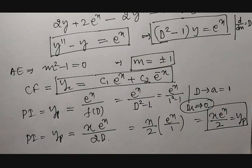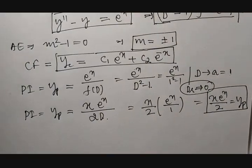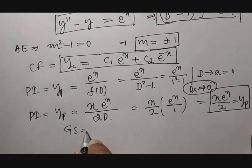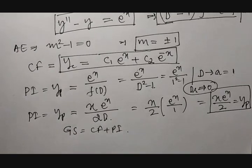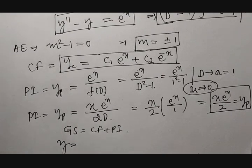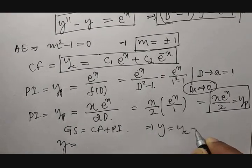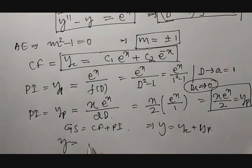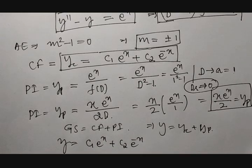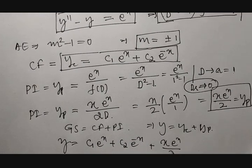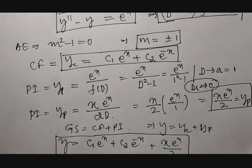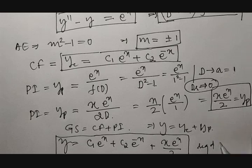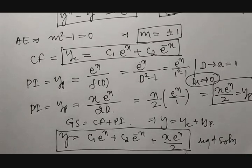Therefore, the general solution is complementary function plus particular integral: y equals yc plus yp, which gives y equals c1 times e raised to x plus c2 times e raised to minus x plus x times e raised to x divided by 2. This is the required solution for the given example.